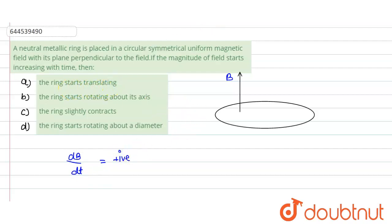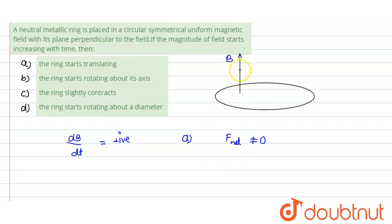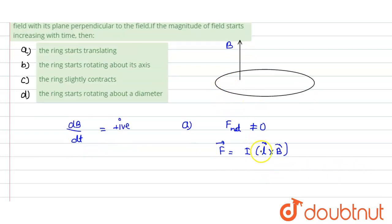Now, is the ring starting to translate? If the ring starts translating, since it was initially at rest, it would be accelerating — that means net force should not be equal to zero. We know that the force on a wire placed in a magnetic field is F = IL cross B. Now, what is the value of L for the ring? L is basically the length vector from the initial to the final point of the conductor.